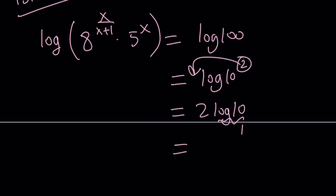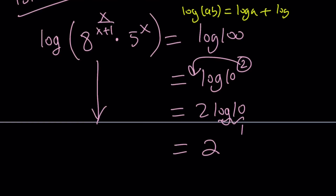The left-hand side is the log of a product, and it can be written as the sum of two logs. We're using a property of logs: if you have log(AB), that can be written as log A plus log B. We can't do the same thing for log(A + B) — the product turns into a sum, but not the other way around.